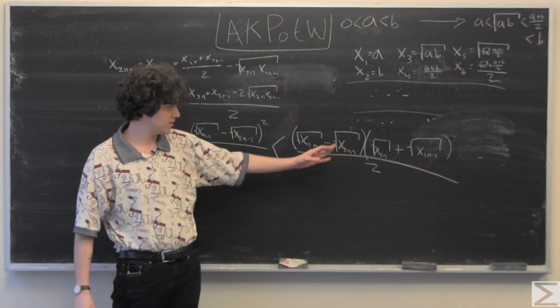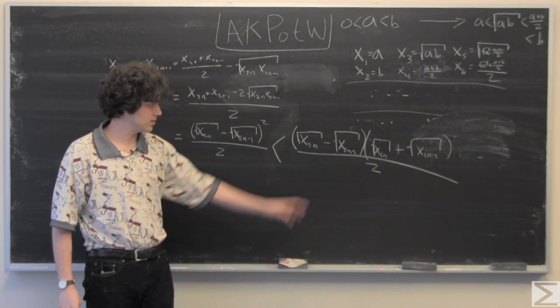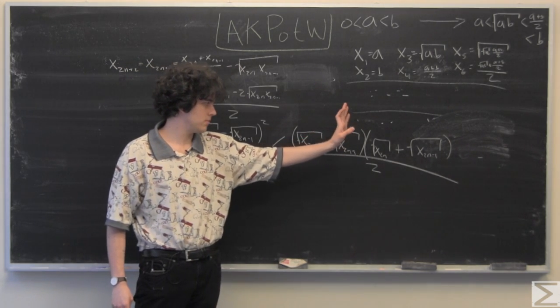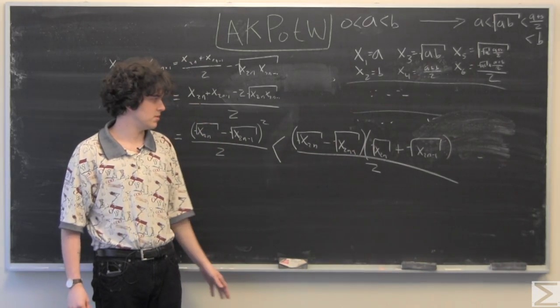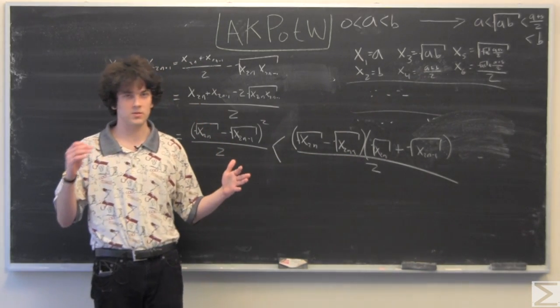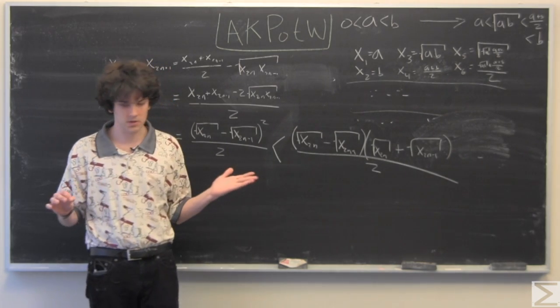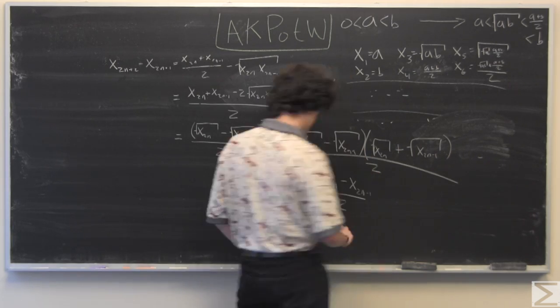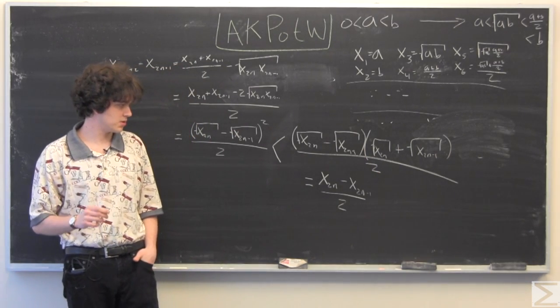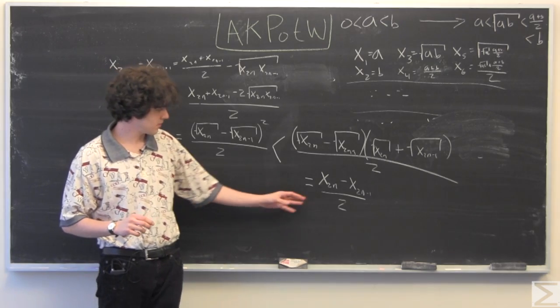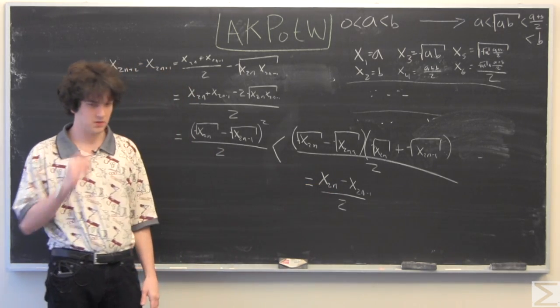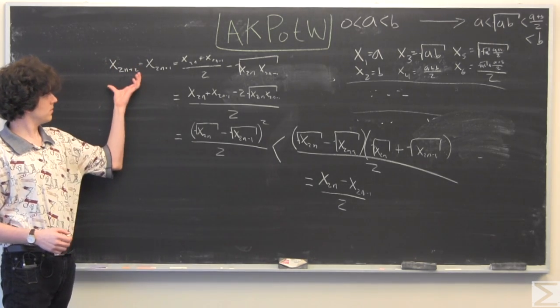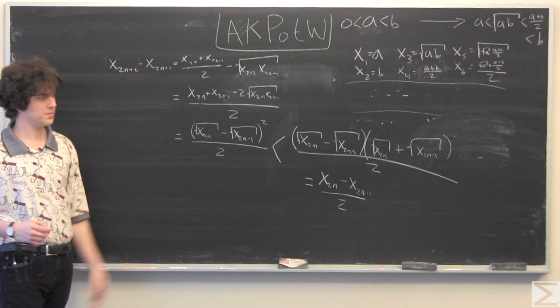And this we can simplify nicely, because since we have a negative term multiplied to a subtraction term multiplied to an addition term, the cross terms are going to cancel. So once the cross terms cancel, we get x sub 2n minus x sub 2n minus 1 over 2.